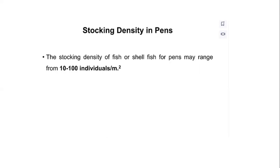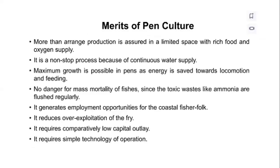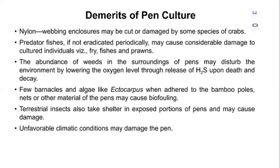The stocking density in pen culture is about 10 to 100 individuals per square meter. The merits of pen culture are: more organized production is assured in limited space with food and oxygen supply; because of continuous water supply, maximum growth can be achieved; there is no danger from mass mortality; it generates employment opportunities; it reduces over-exploitation; and it requires comparatively low capital outlay and simple technology of operation.